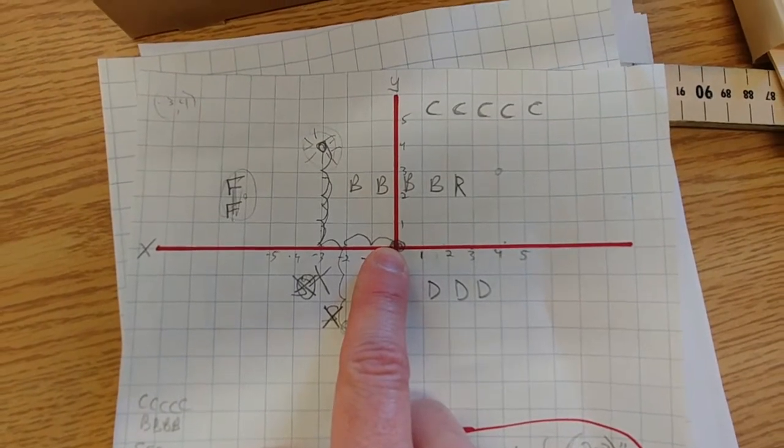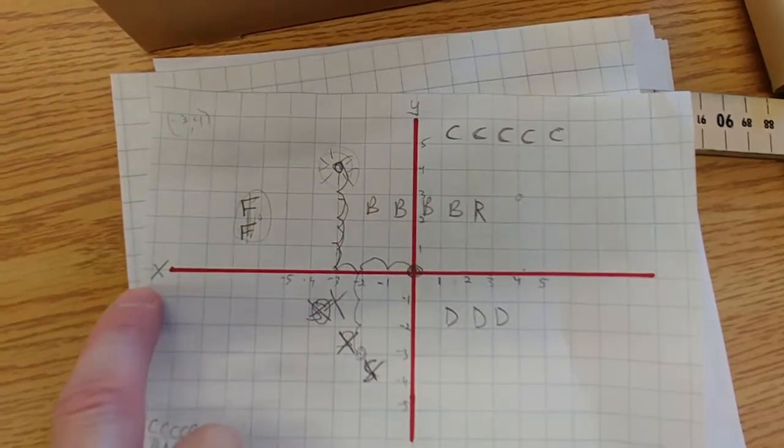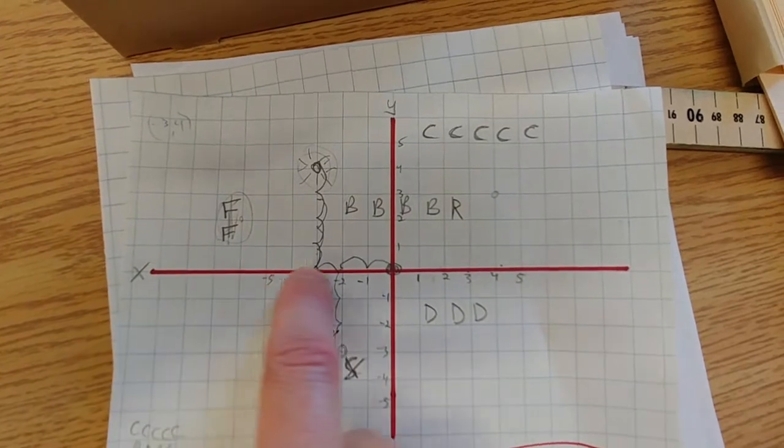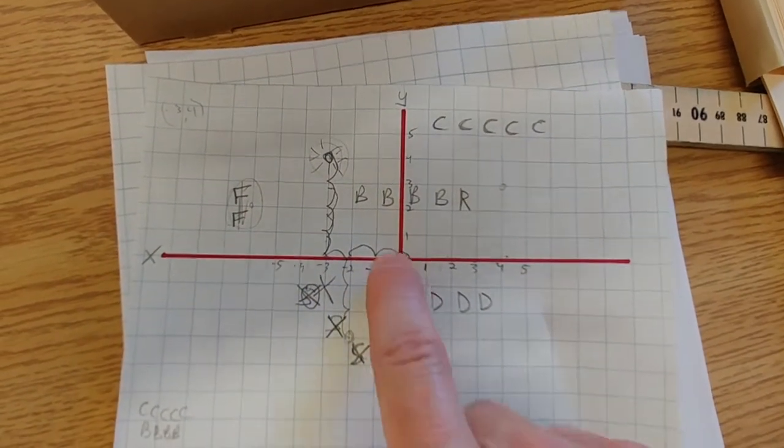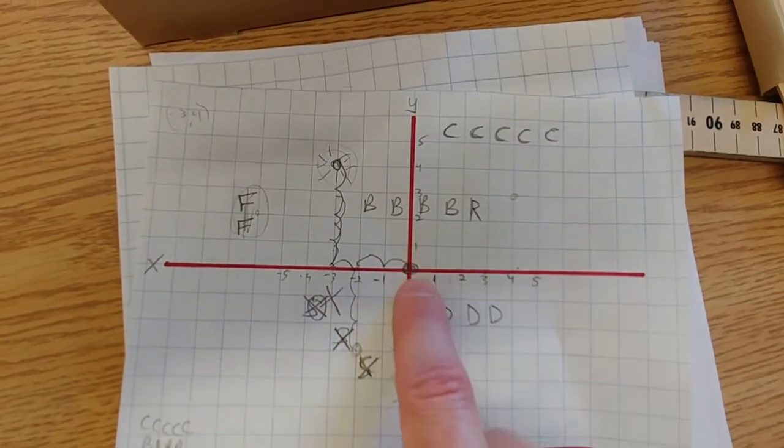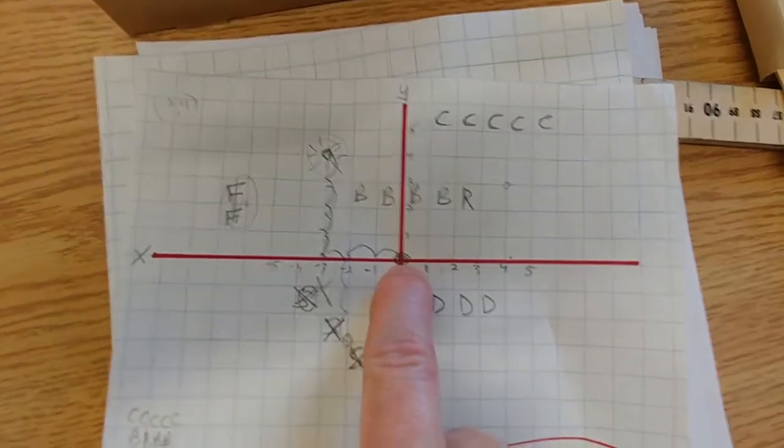So how it counts is you'd call 0 on the X is right there and 0 on the Y right there. From there you can count upwards or down.